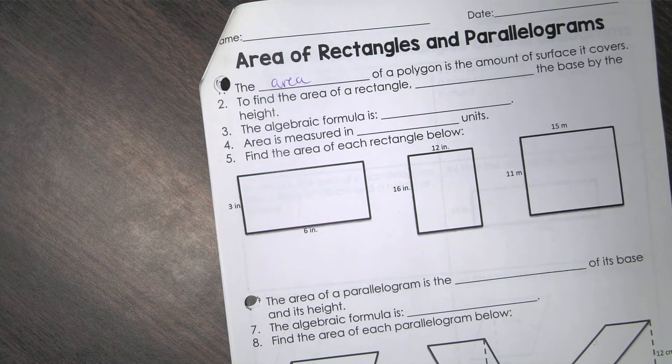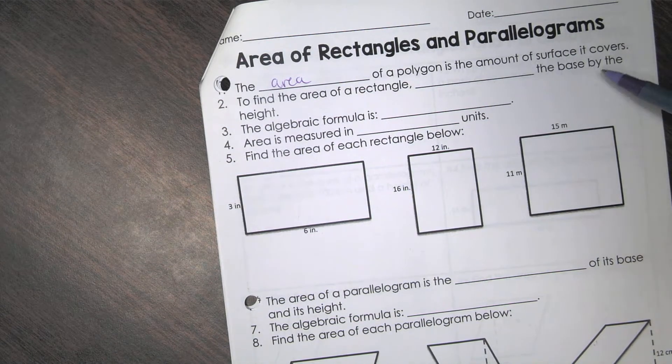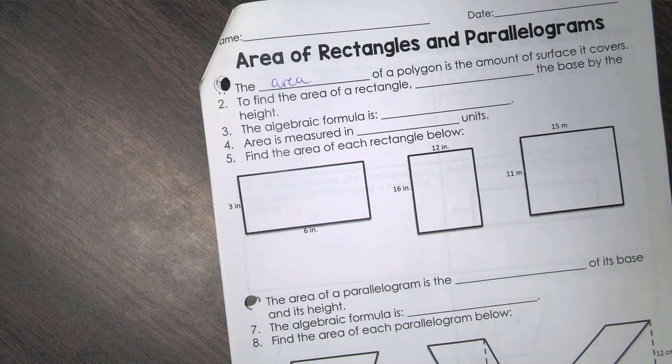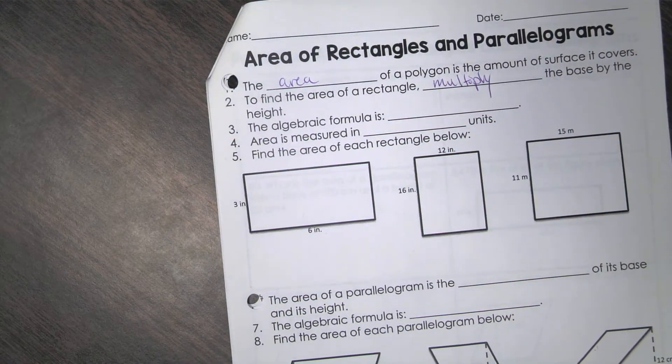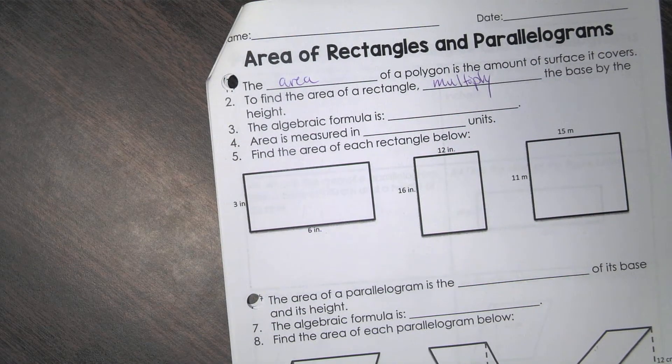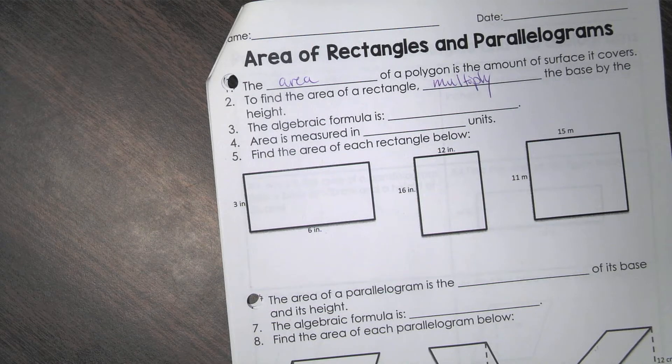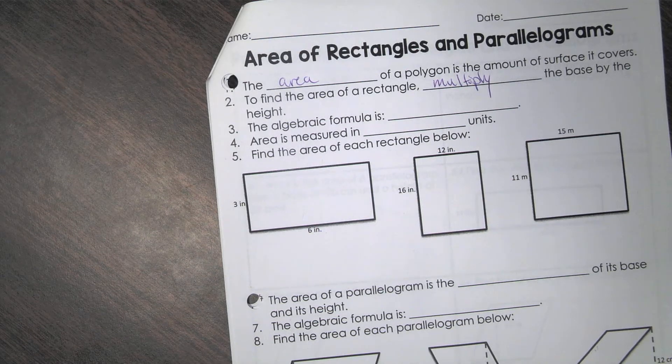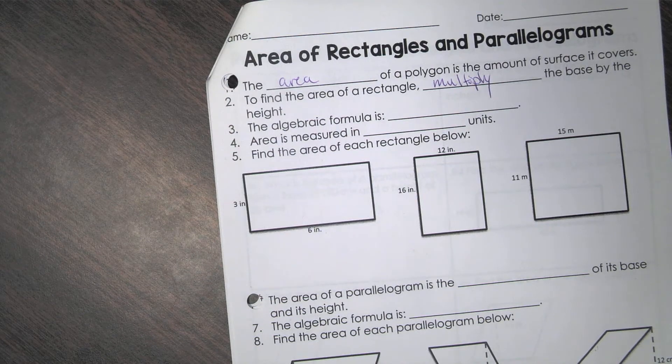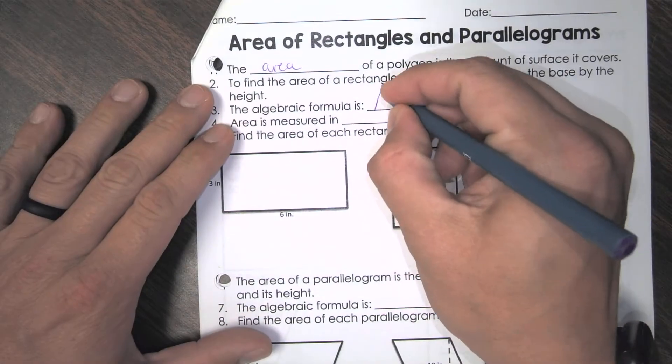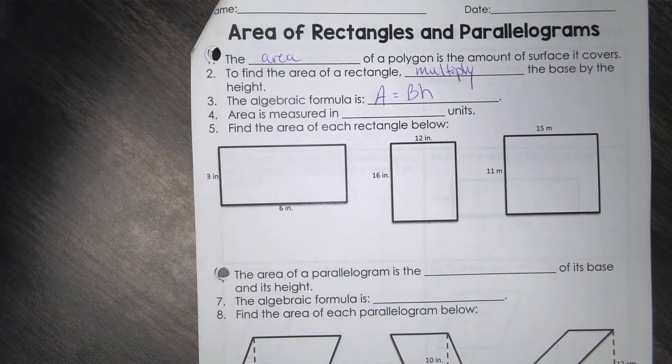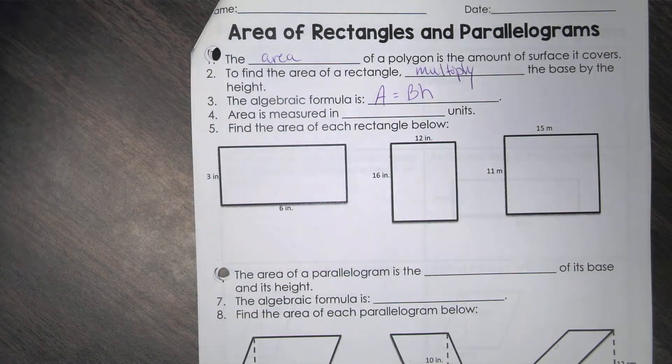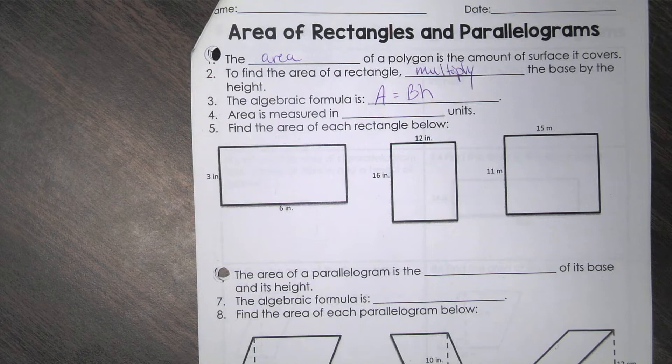So to find the area of a rectangle, you blank the base by the height. Does anybody know what you do? Multiply. So you multiply base times height, which is just length times width, basically. So the algebraic formula is A equals base times height. To find area of a rectangle and parallelogram, you're literally just multiplying two things. That's it. It's that easy.